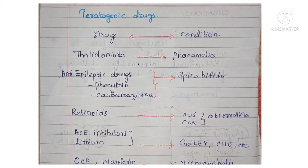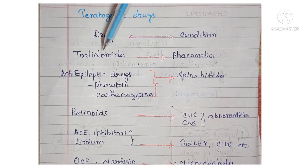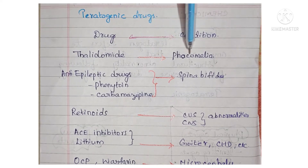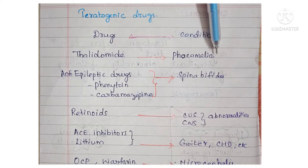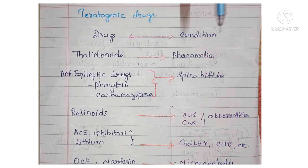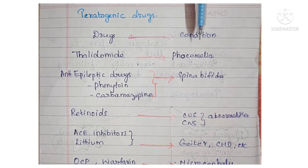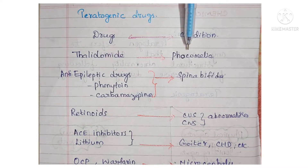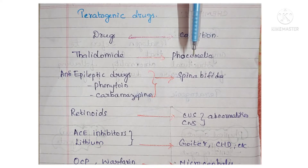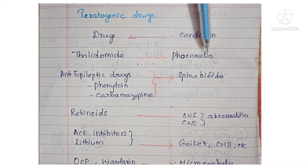Next, we will see some teratogenic drugs. For example, thalidomide causes phocomelia. Phocomelia means the extremities — that is the hands and legs — will be extremely shortened or underdeveloped. Sometimes the legs or hands may be absent, or if present, will be very small. The bones will not develop properly and the limbs are attached directly to the shoulder and hips. That is called phocomelia.